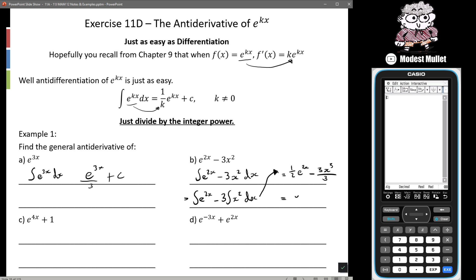So we're going to get e to the 2x on 2 take away x cubed. So nice and easy. Plus c, plus c.